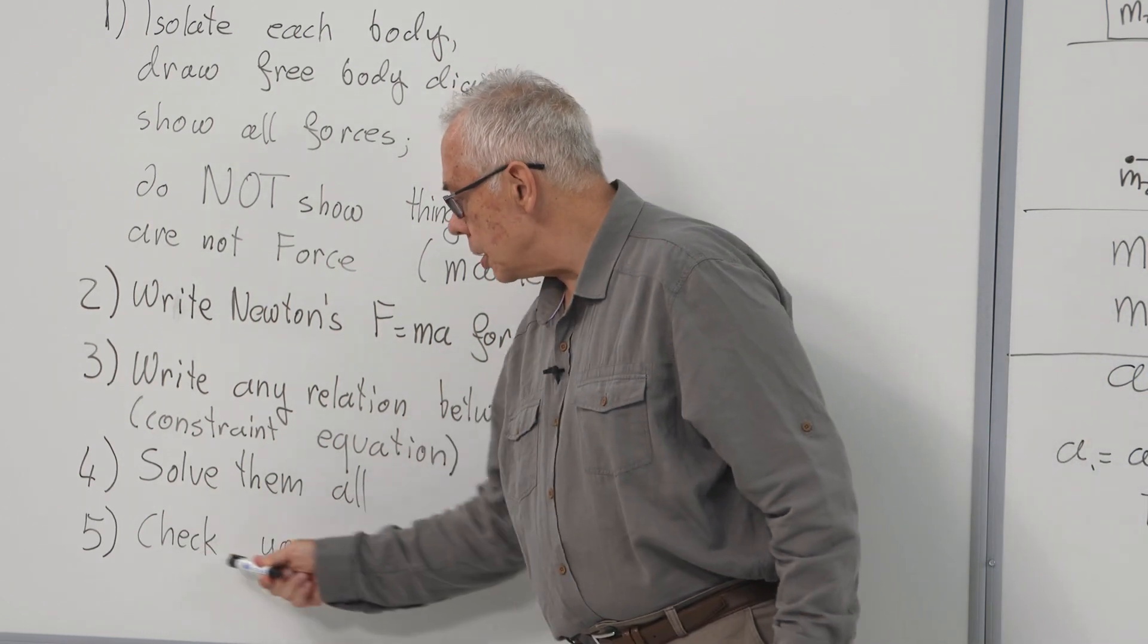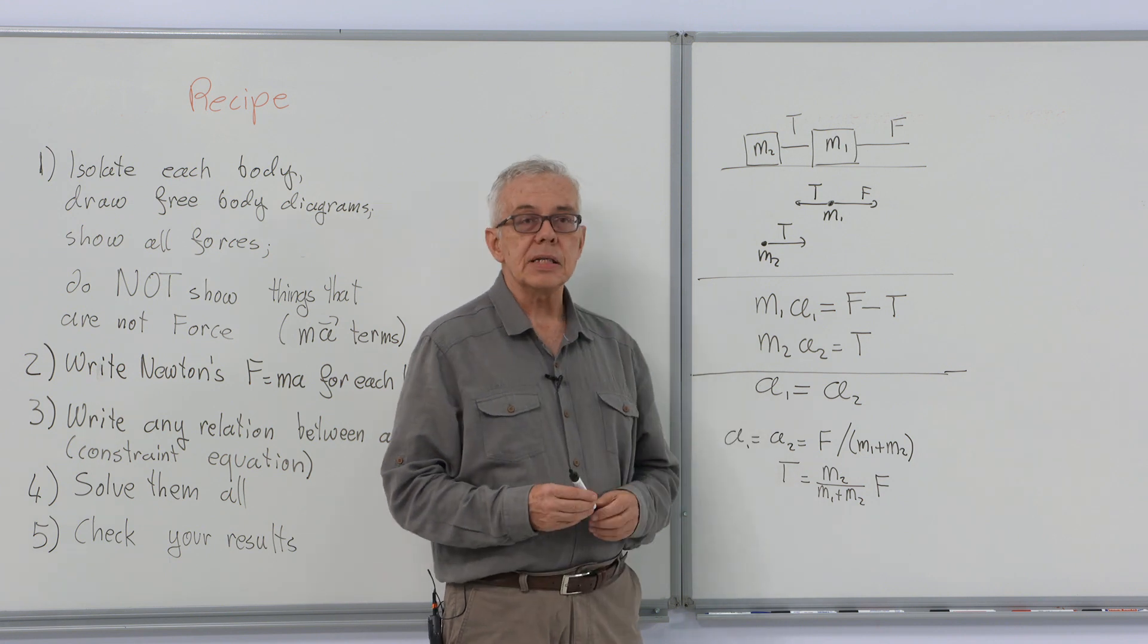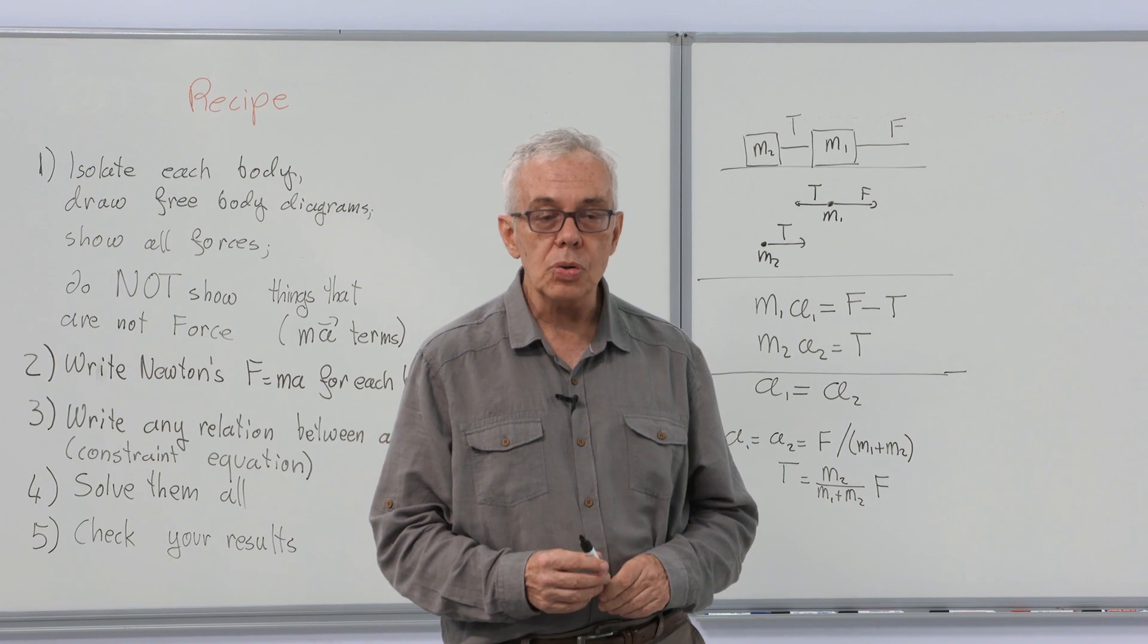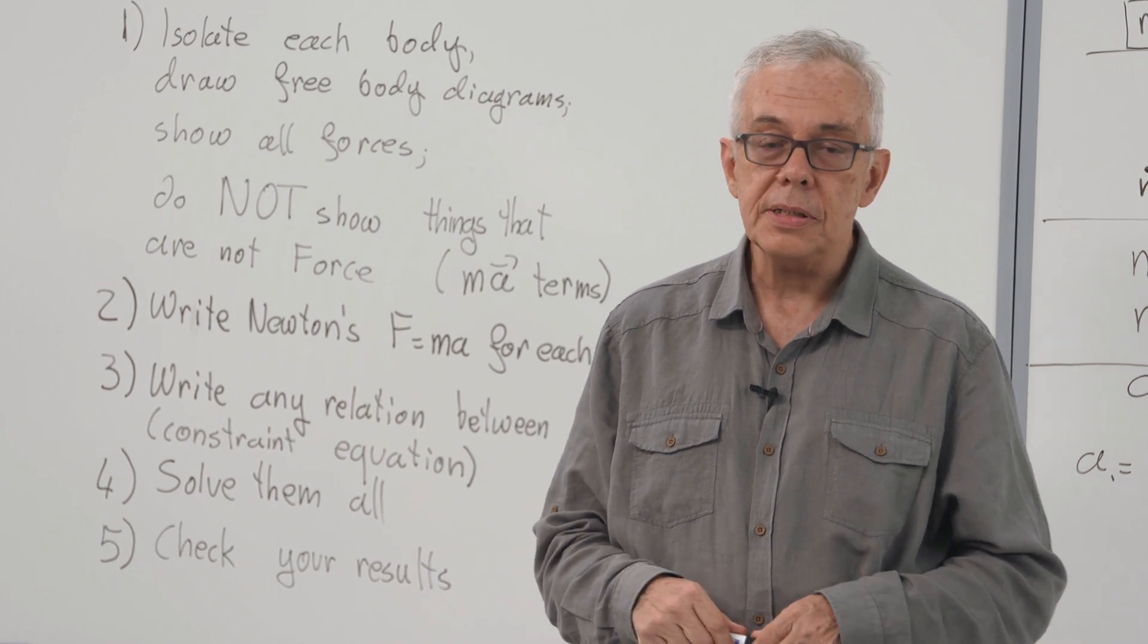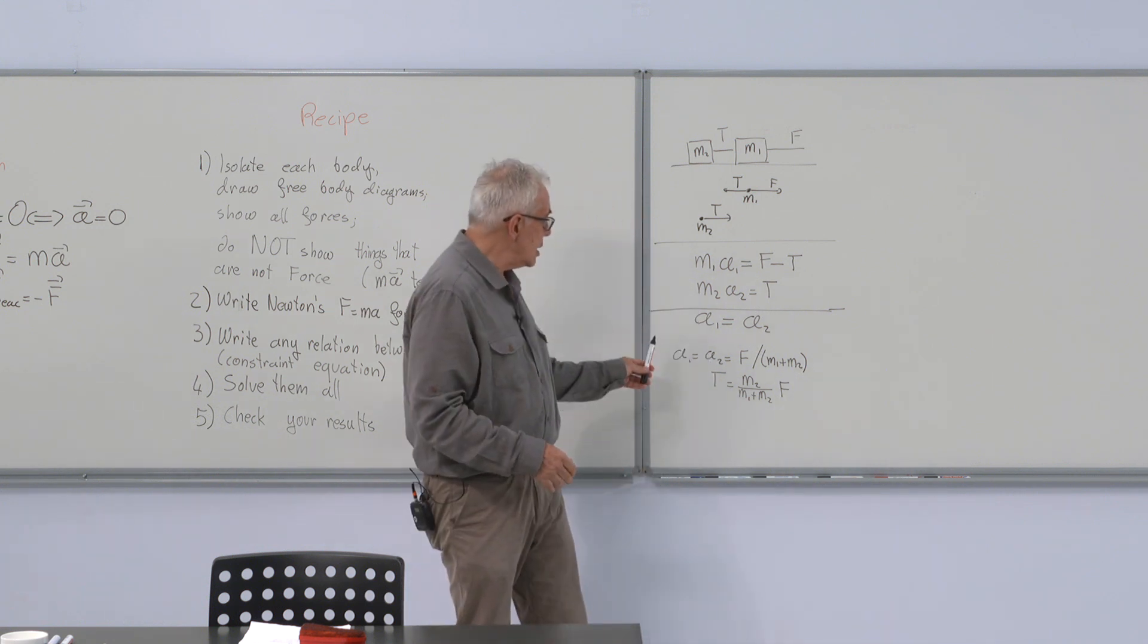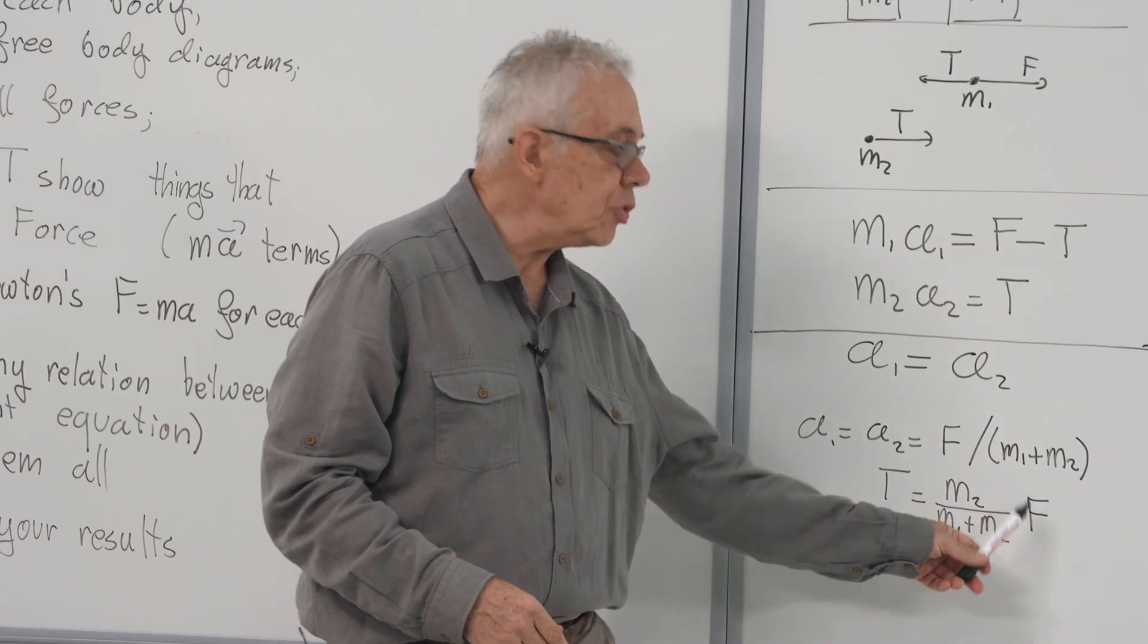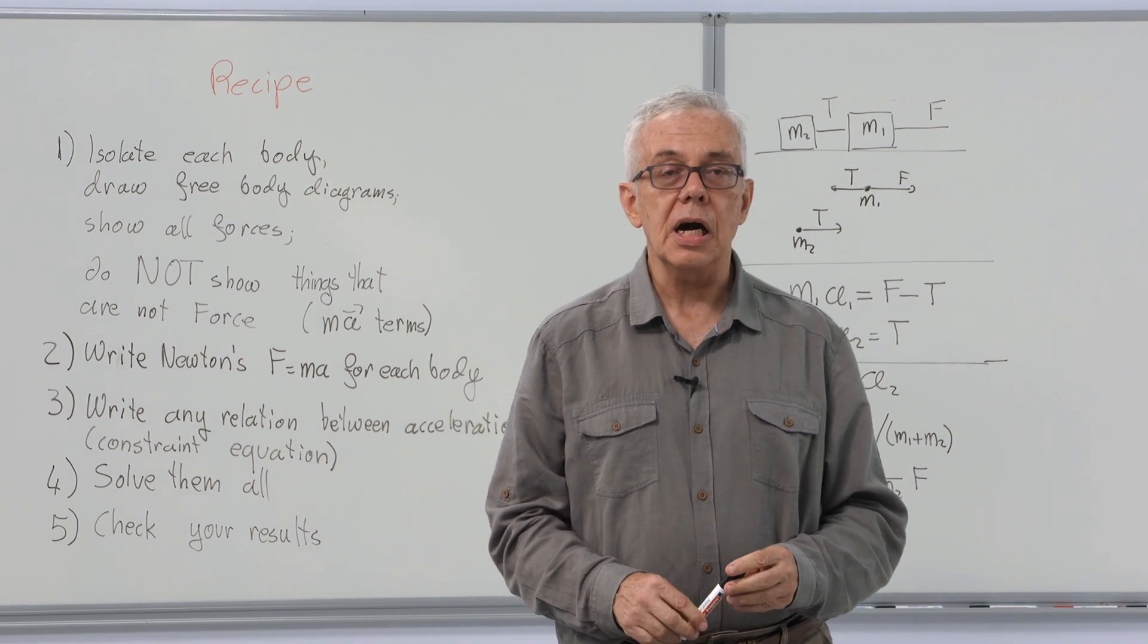Finally, check your results. Here, we will check if our results make sense dimensionally. Because if an answer is dimensionally wrong, it is obviously wrong. The reverse is not true. An answer can be dimensionally correct but still be wrong. But a dimensionally wrong answer is obviously wrong. Here, acceleration has unit of force divided by mass. Fine. And tension has same unit as force. Fine. So our dimensions are consistent.